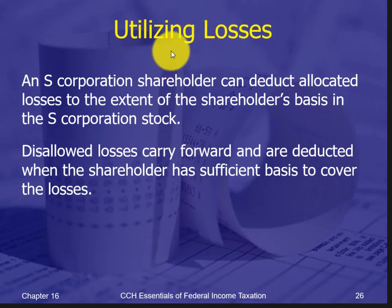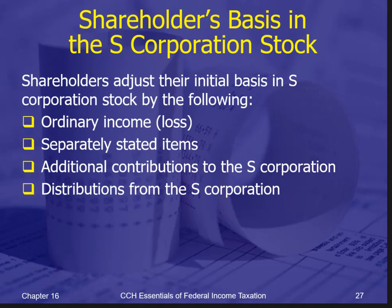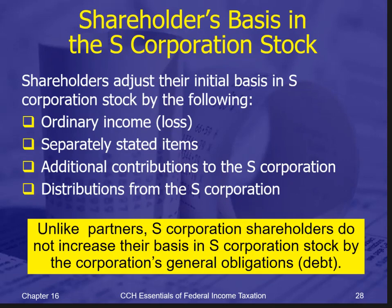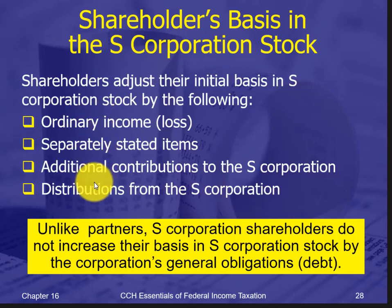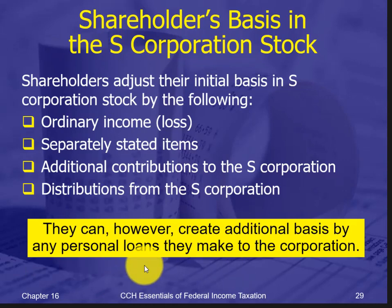Losses for an S-Corporation can only be deducted up to the shareholder's basis — very similar to partnerships. Anything you cannot deduct this year must be carried forward until you have sufficient basis in the future. Basis is increased by ordinary income and separately stated income items, additional contributions, and decreased by distributions — similar to a partnership. The important difference is that S-Corporation shareholders do not increase their basis with the debt or liabilities of the corporation, unless it is an actual loan that the shareholder personally makes to the corporation.